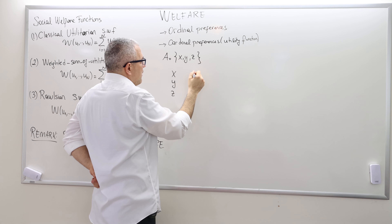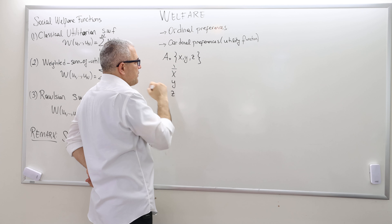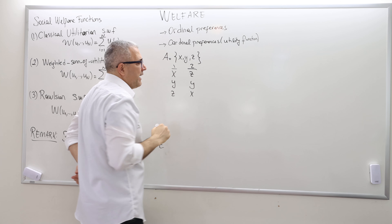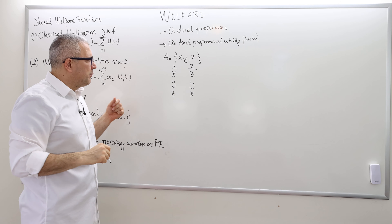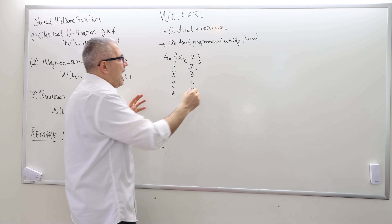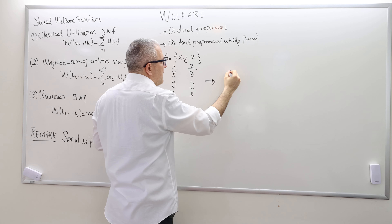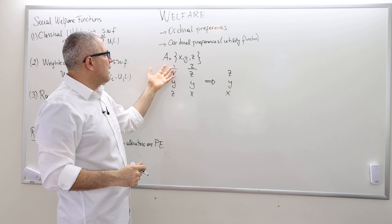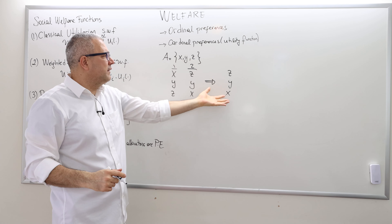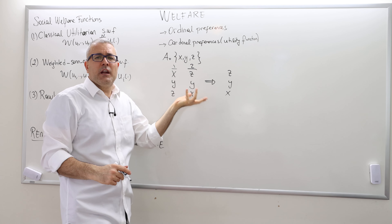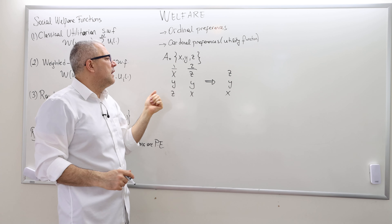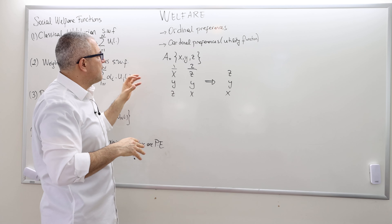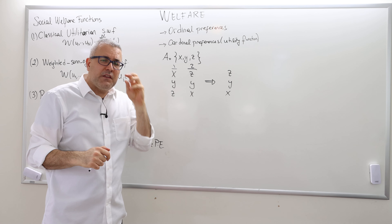For example, say we have three alternatives x, y, and z. Agent one prefers x over y over z, while two agents say z is better than y and y is better than x. According to Condorcet voting, the social preference will be z, y, x — because the majority of two prefers this ranking, so the socially best alternative according to Condorcet is z.